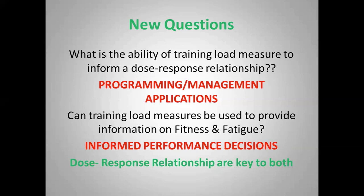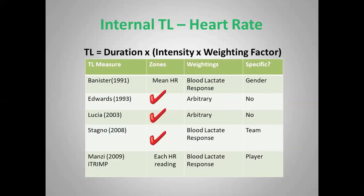Just to briefly overview the heart rate training load methods — there are a number of popular ones set out in chronological order. They differ because they either use arbitrary weightings or arbitrary zones. The typical formula is that the duration of exercise is multiplied by the intensity and some sort of weighting factor. Banister's TRIMP briefly uses the mean heart rate; it's difficult to use in team sports because of fluctuations, but the weightings use the typical lactate response and are specific to gender.